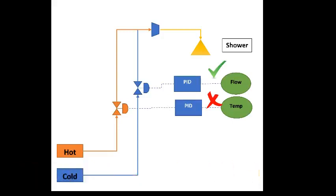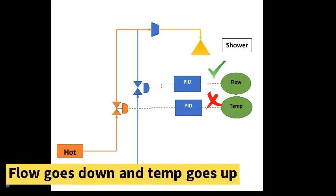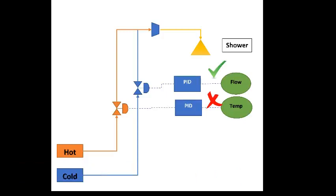This will then cause the flow to go down back to its set point but the temperature goes up. This happens because the flow controller does not know about its impact on the temperature and vice versa.